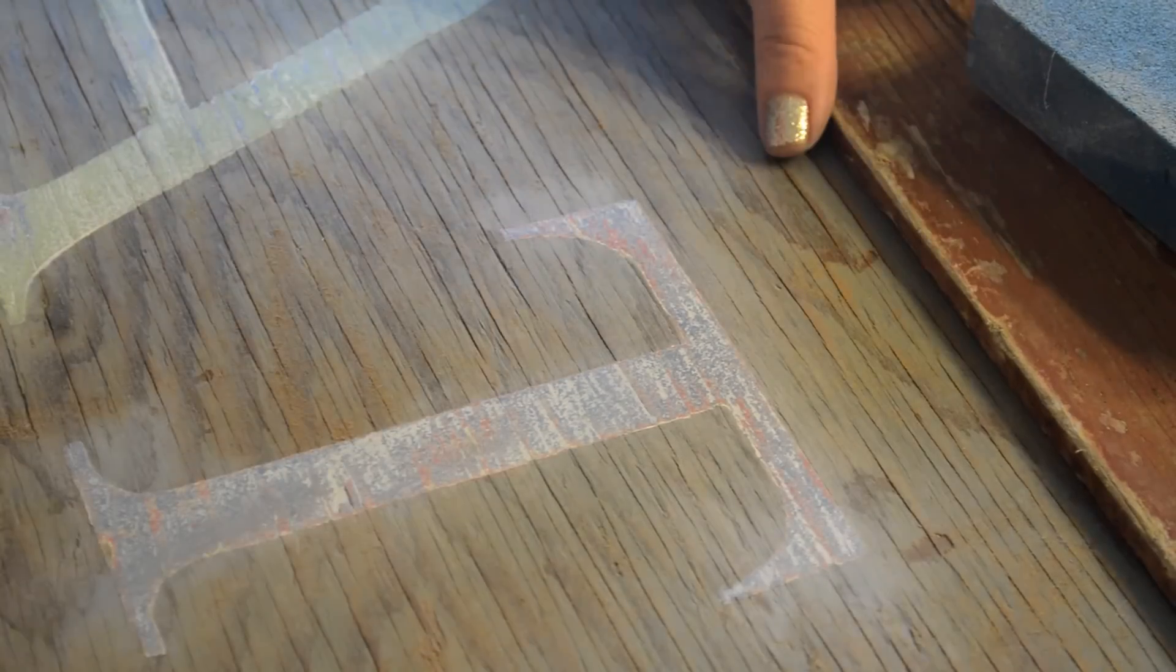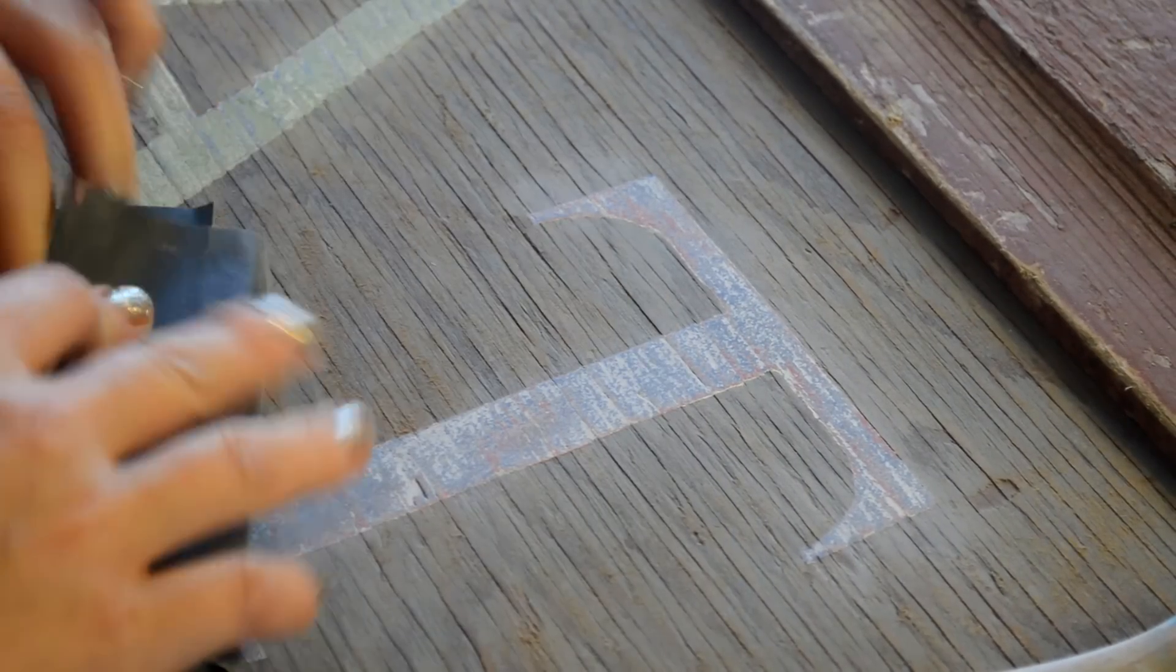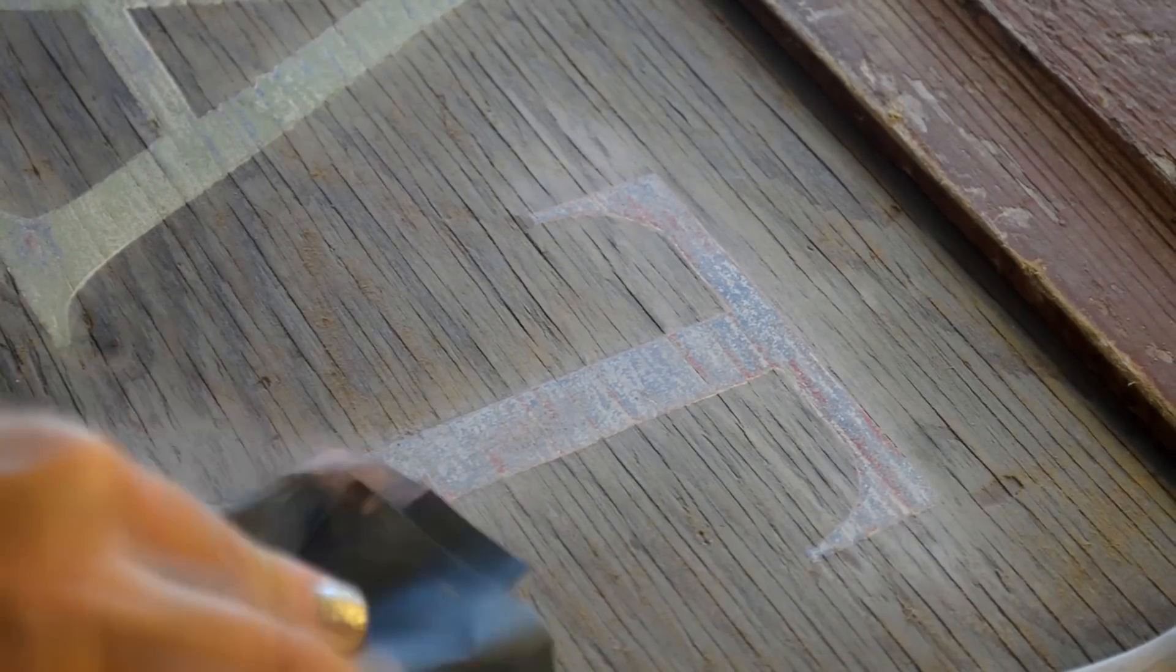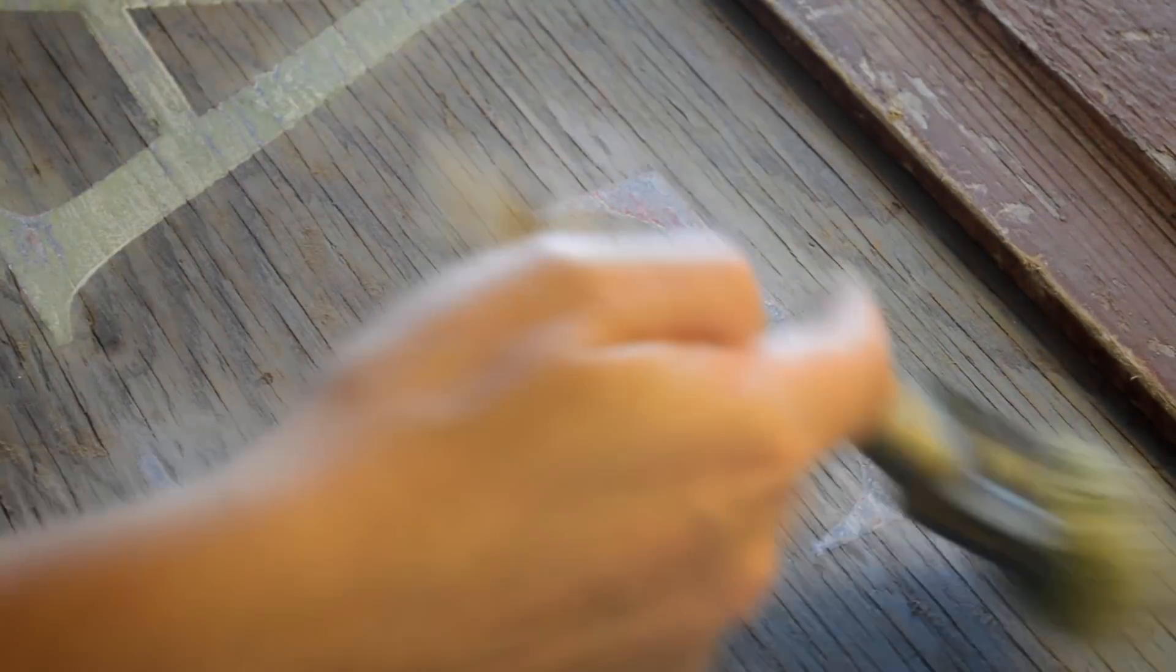Okay, so for the first step I use the 150 grit, and then you're going to want to go over it with your 320 to smooth it out. And that's it.